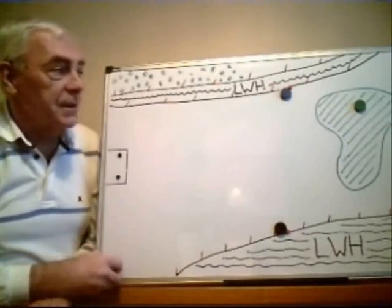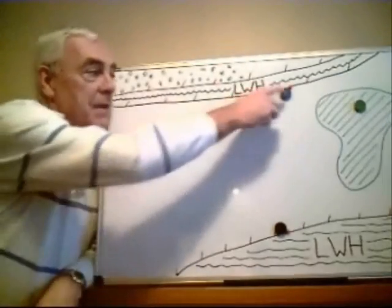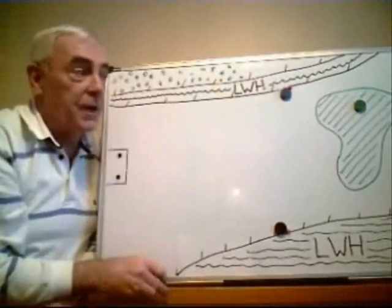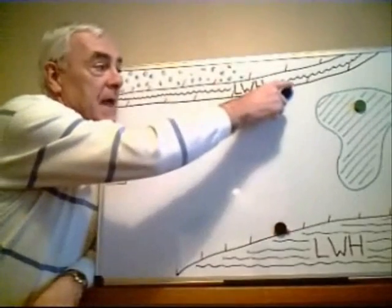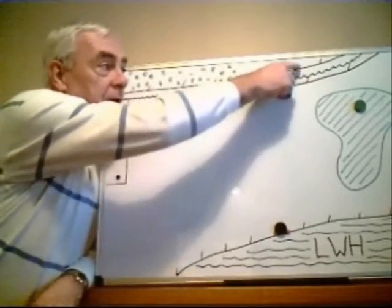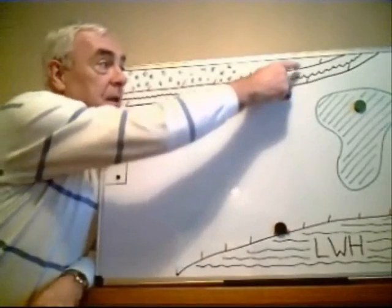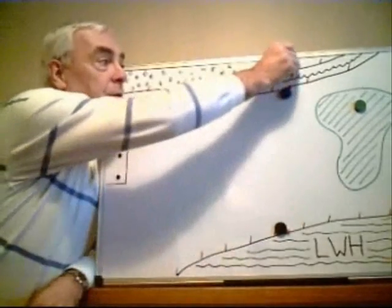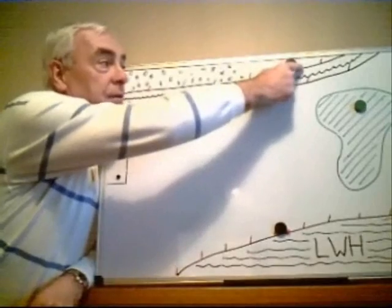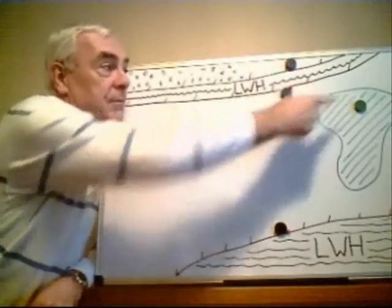He may go over to the other side of the lateral water hazard, taking a point that's equidistant from the flagstick from this point where his ball last crossed the margin. So he can drop a ball within two club lengths of this point, which is equidistant from the flagstick.